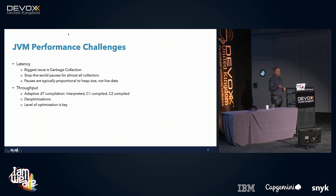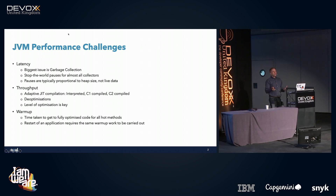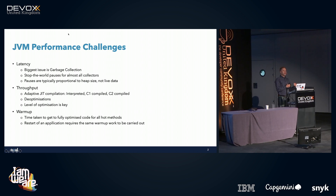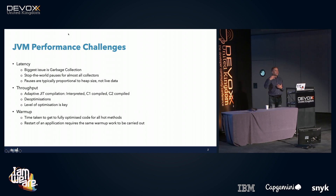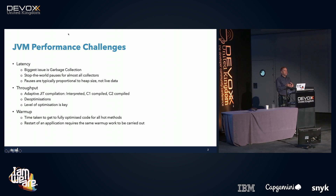The third thing from a performance perspective is warm-up time — how quickly can we get the application running at 100% performance? That time covers analyzing which methods to compile, compiling them with C1, then with C2. The real problem is that every time we start the application we go through the whole same process again — we don't learn from our past runs.